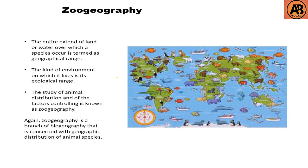Firstly, I would like to tell about zoogeography. The entire extent of land or water over which a species occurs is termed as geographical range. The kind of environment on which it lives is its ecological range. The study of animal distribution and the factors controlling it is known as zoogeography — a branch of biogeography concerned with the geographic distribution of animal species. Here we can see in this picture different types of animals and species which indicate the zoogeography area.